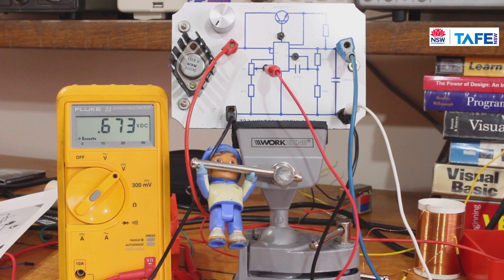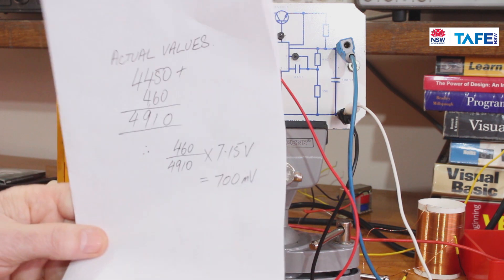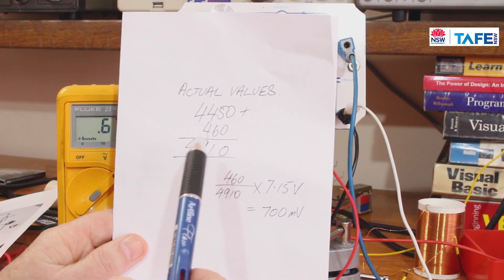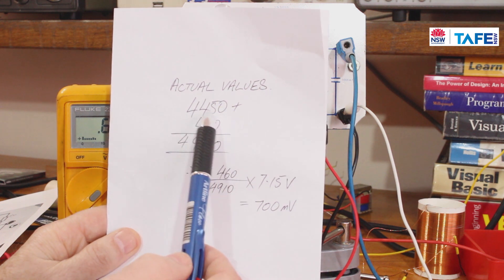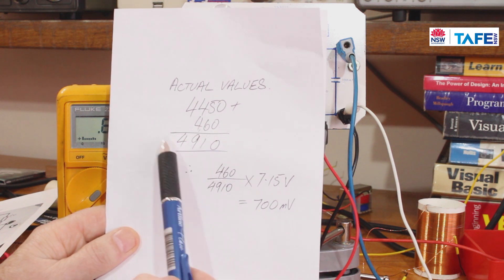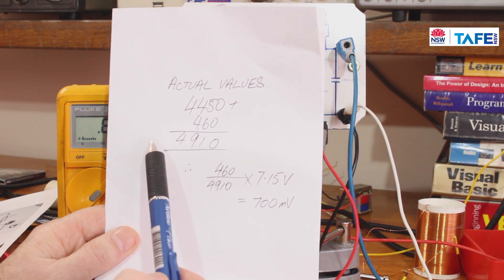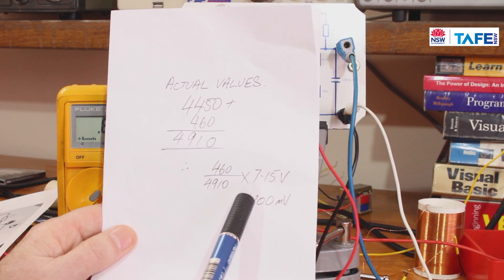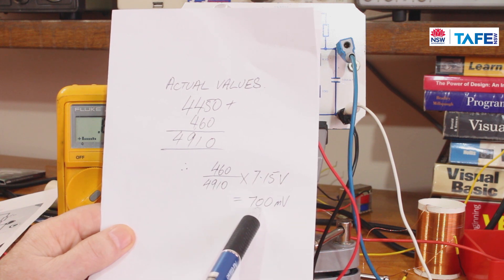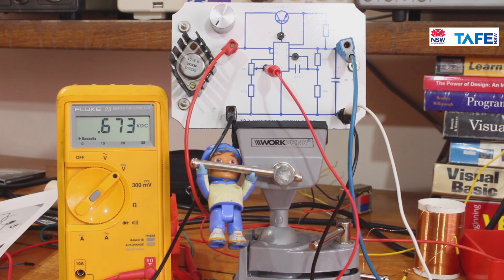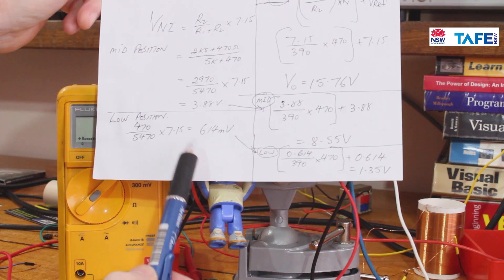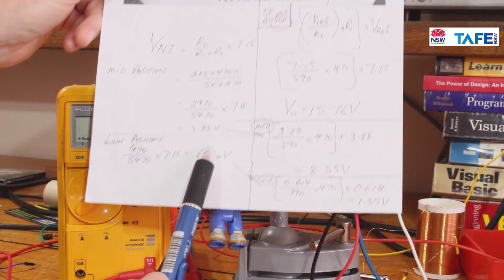So just now, here's the maths based on that 4,450 then, which is what I measured. Add the 460 to give me the R1 plus R2. R2 divided by R1 plus R2 times the reference voltage: 700 millivolts. On the day we're reading just a little bit below that. So was quite interesting. The original sums said that based on the maths that we would have had that, but that was based on having 5k and having 470.